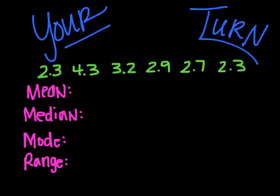It is your turn now. The digits, the data sets are listed in green. And then you are going to tell me what the mean, median, mode, and range are at this time. And the answers there are listed now for you.